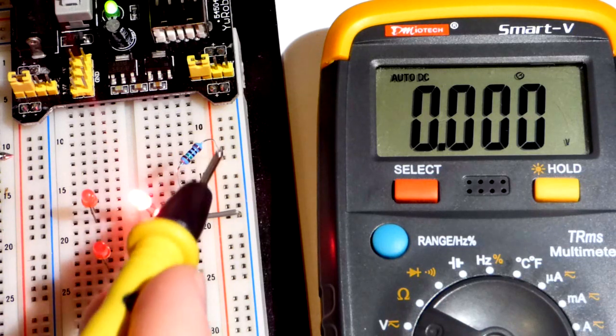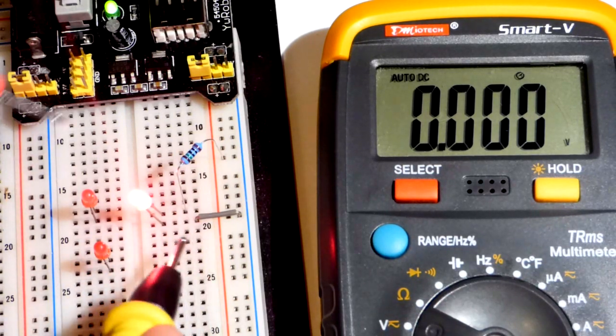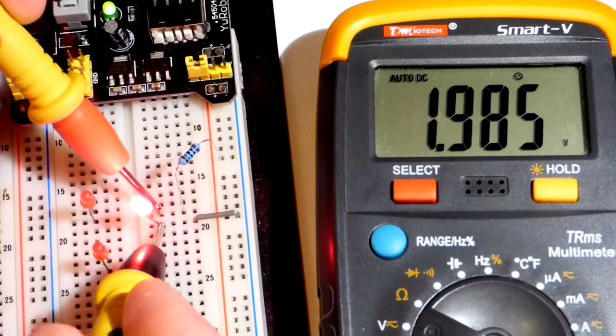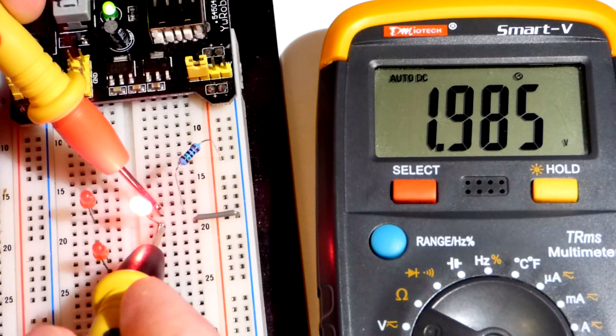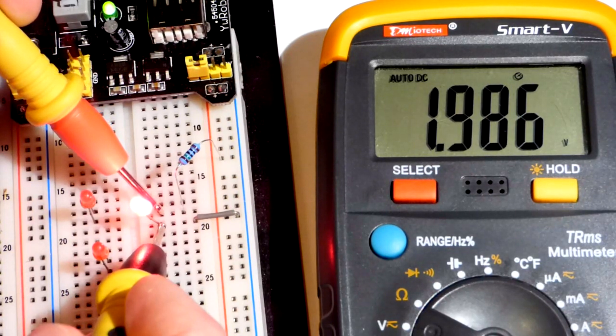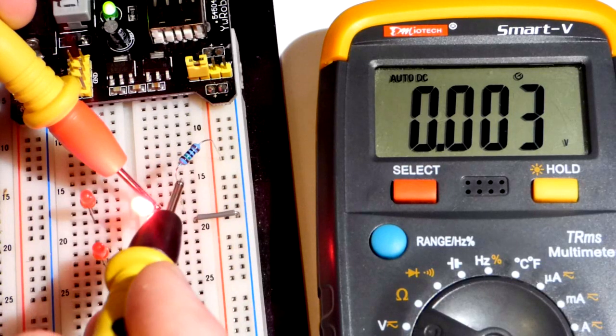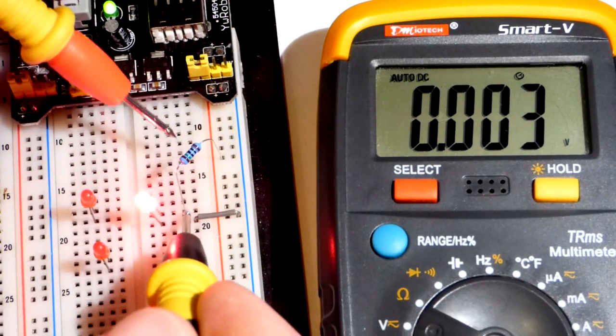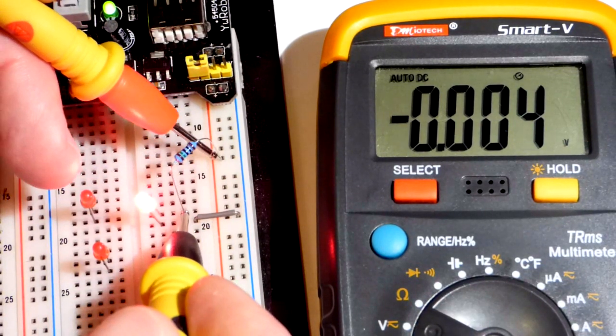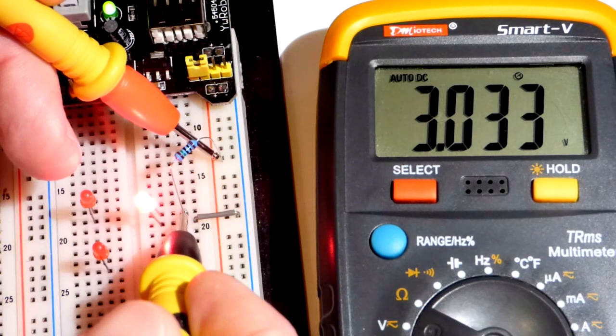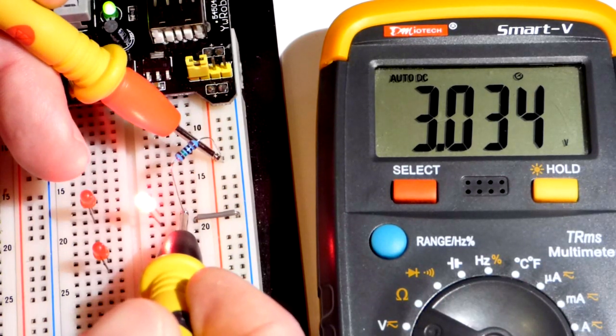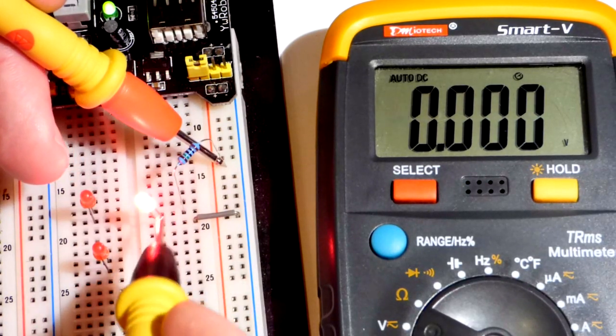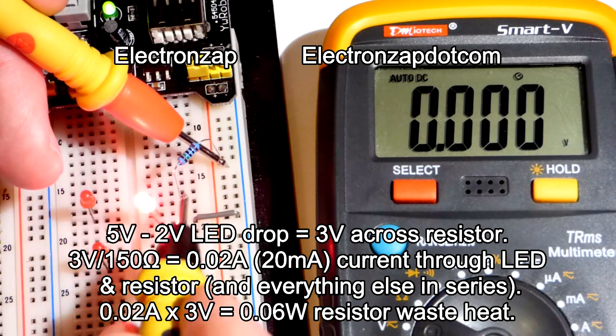Right now we have the 150 ohm resistor and the LED. As we saw, that gave us pretty much spot-on 20 milliamps of current. So we have 2 volts across the LED. So this LED is blocking, as far as the resistor is concerned, 2 volts from the power supply. So that's why there's a voltage built up across there. If we come over here, the rest of the power supply voltage, 3 volts, is across the resistor.